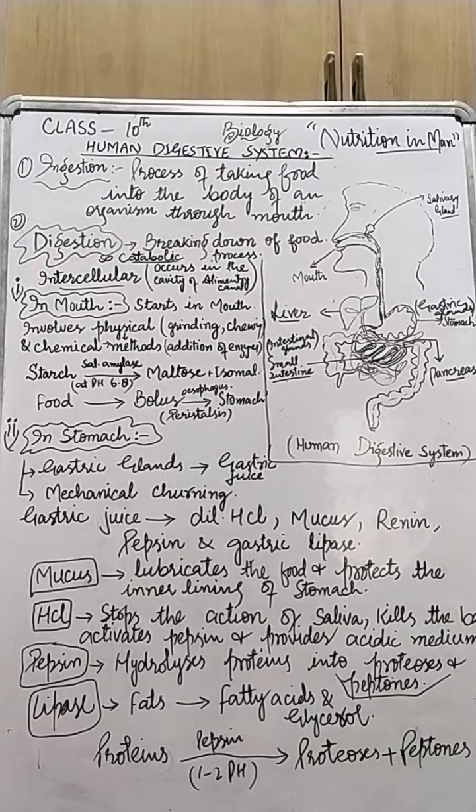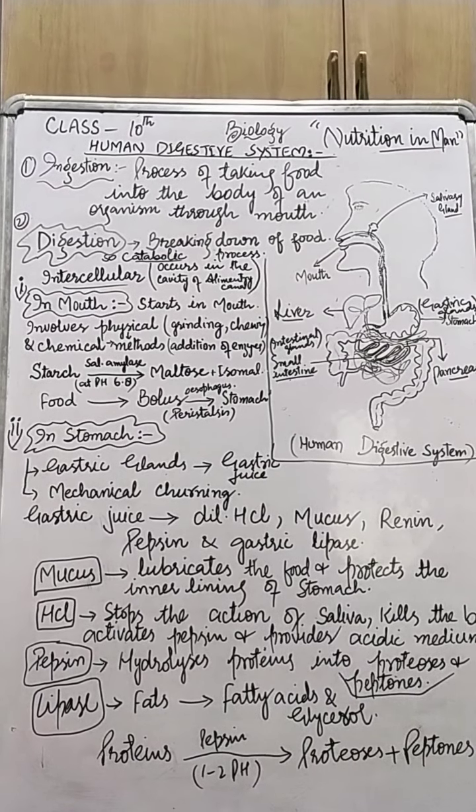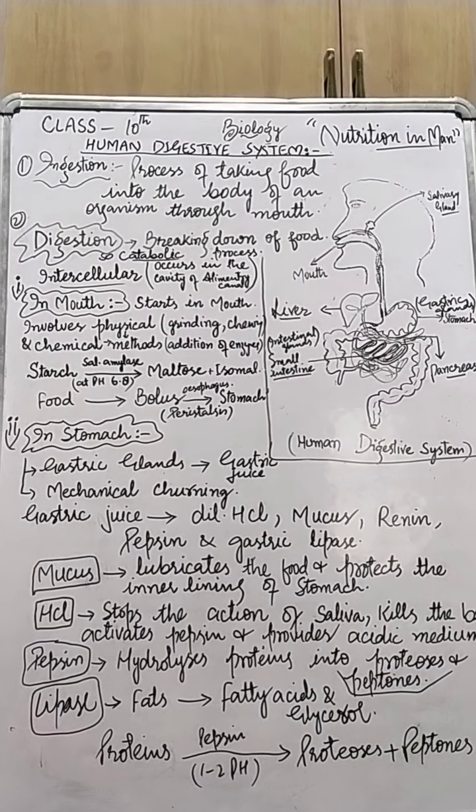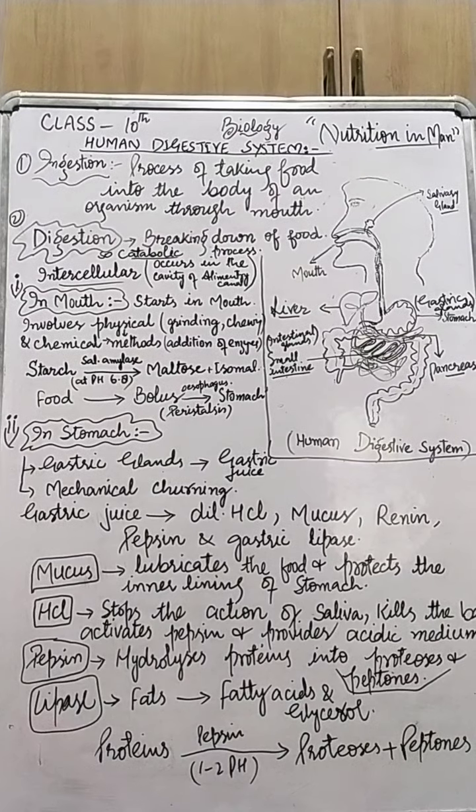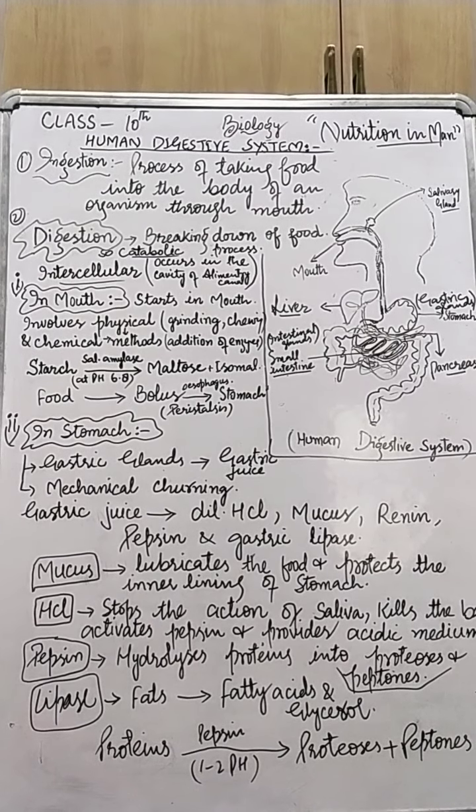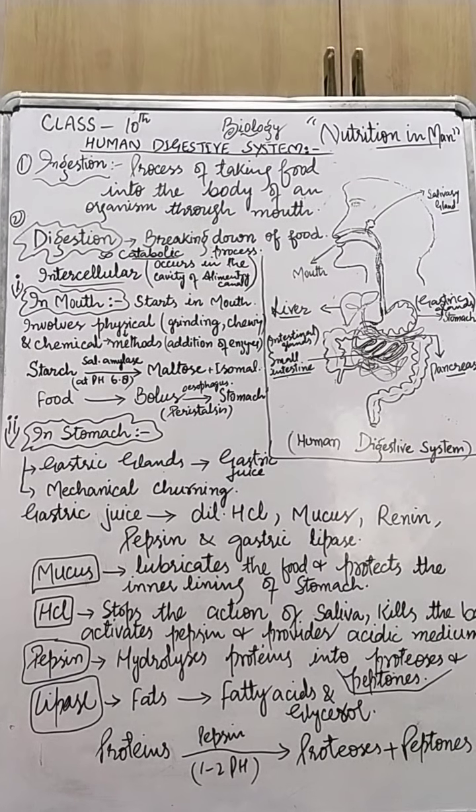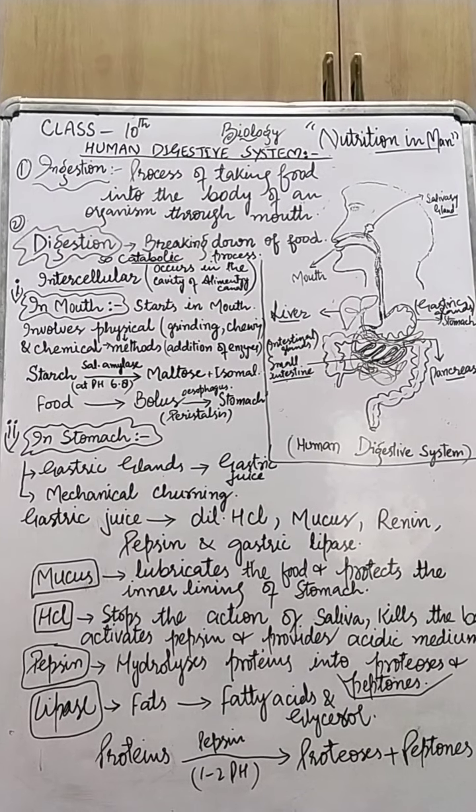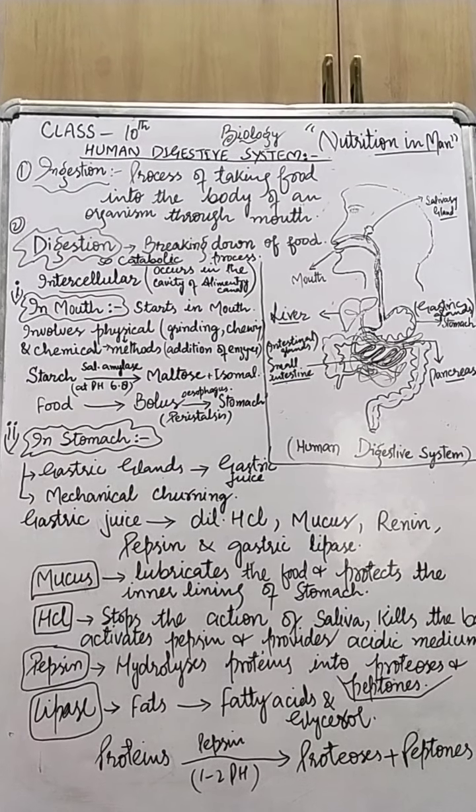For this nutrition, the steps like ingestion, digestion, absorption, assimilation and egestion, these steps are performed by highly developed organ system and that system is called the digestive system. It is the alimentary canal and the associated glands. We have talked about them in our previous classes.